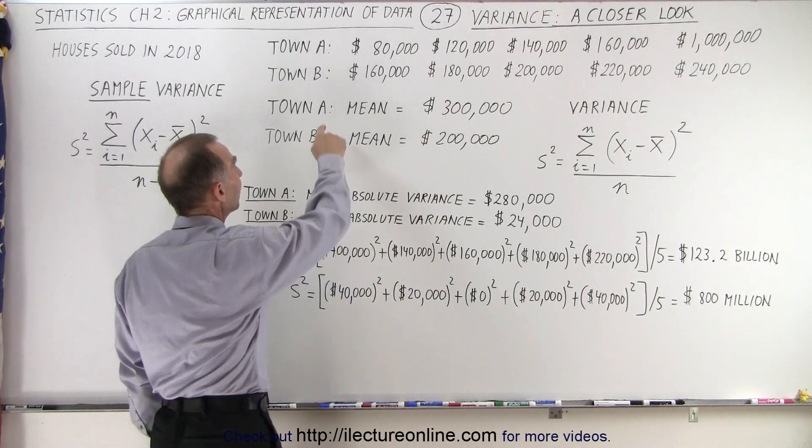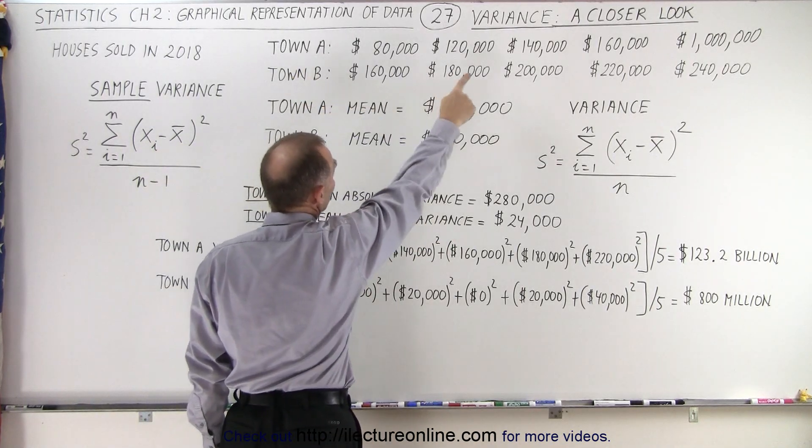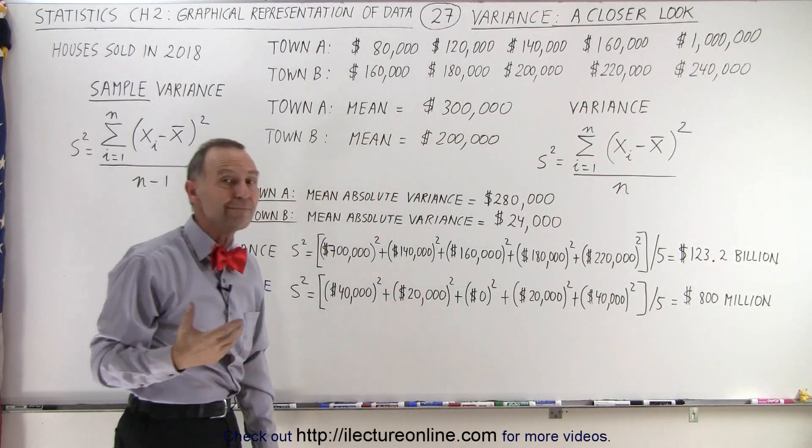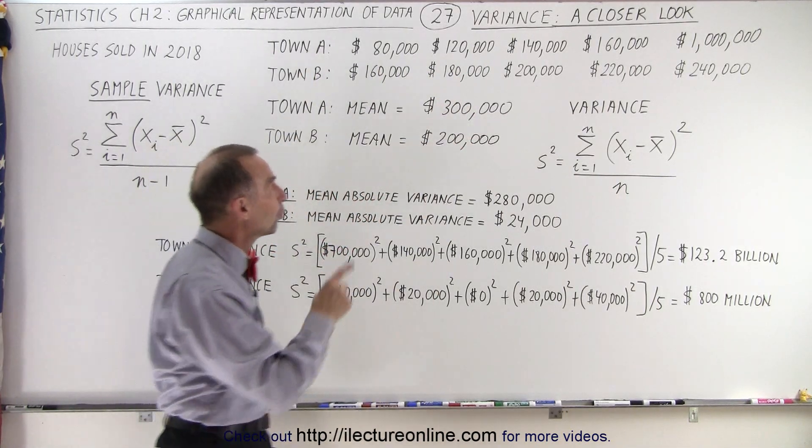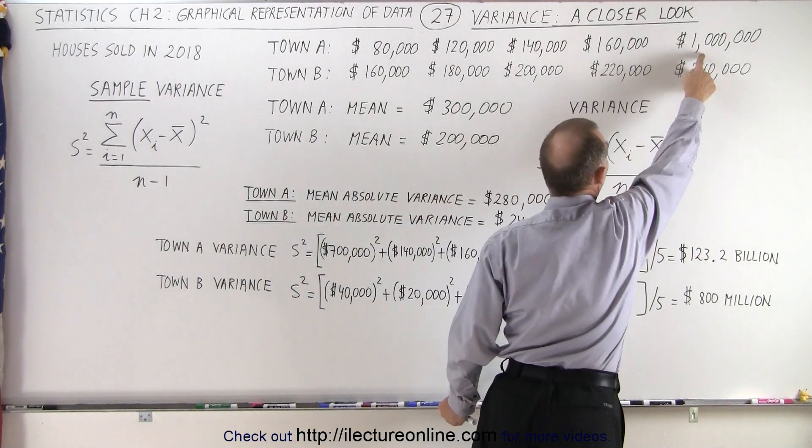And we noted that for town A, even though generally the houses were cheaper, it had a larger or higher mean in the sale price because one of the houses sold for a very high price.